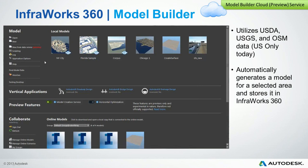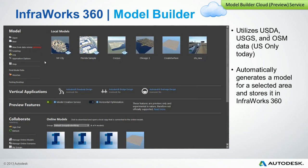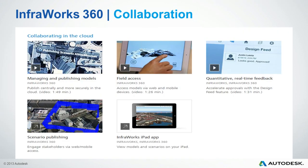Model Builder allows us to simply identify a portion of a map and ask it to build a model from already available data sources that we've gathered together. Some of them include the USDA, USGS, and OpenStreetMap data. Currently it is limited to only the continental United States, but we hope to expand that in the near term. It automatically generates a model for the selected area, stores it in the cloud, and within 15 minutes — typically significantly less — I get a little email that tells me it's ready, and then I can download it.